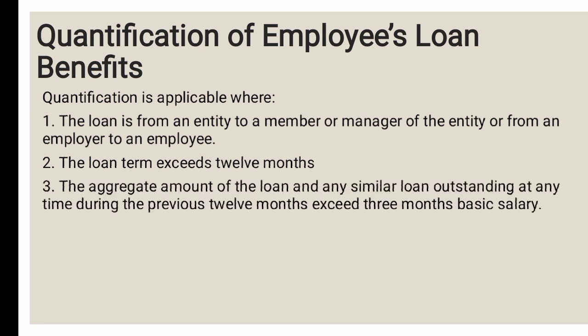Three, the aggregate amount of the current loan and any similar outstanding loan during the previous 12 months exceeds three months of the basic salary. In other words, take the current loan, add any similar loan from the previous 12 months that is still outstanding, and together they should not exceed three months of the employee's basic salary.